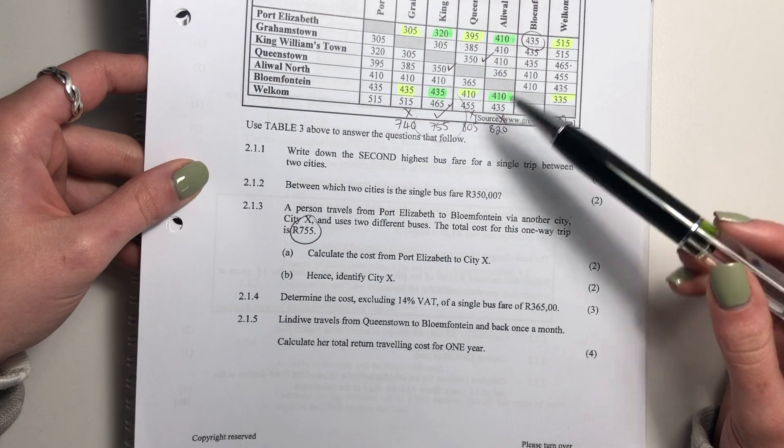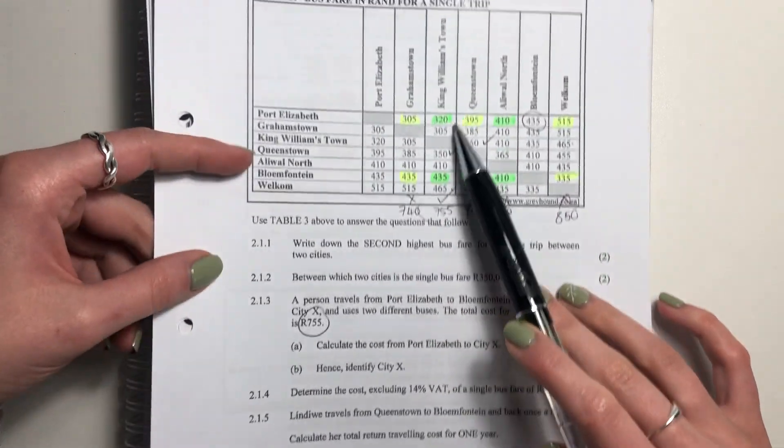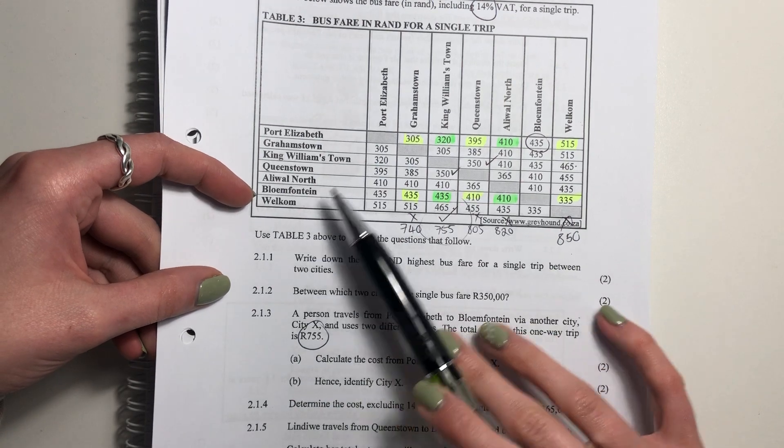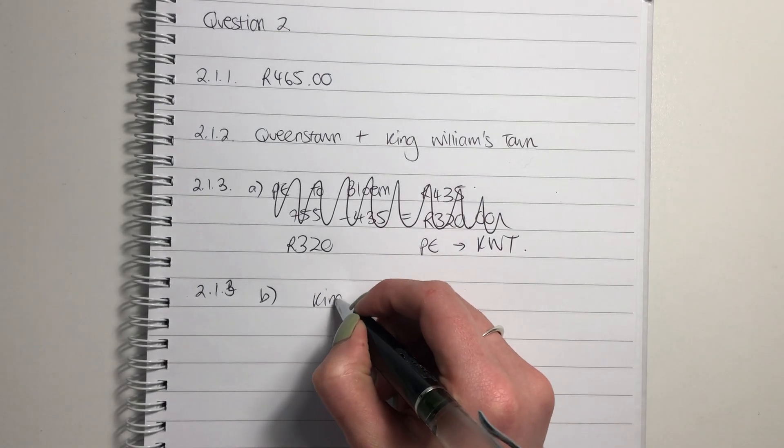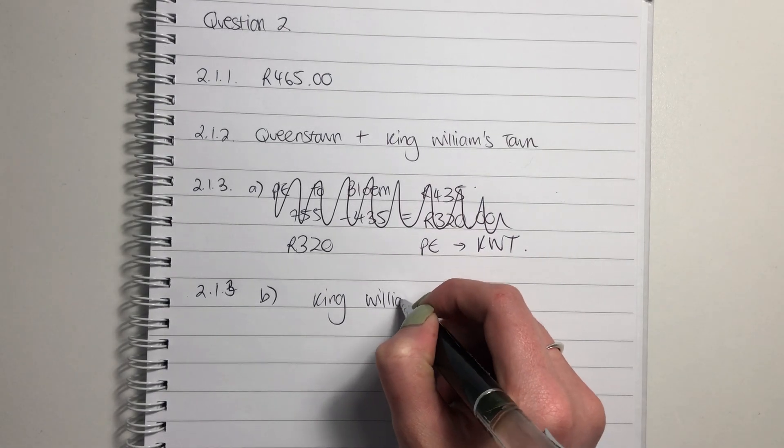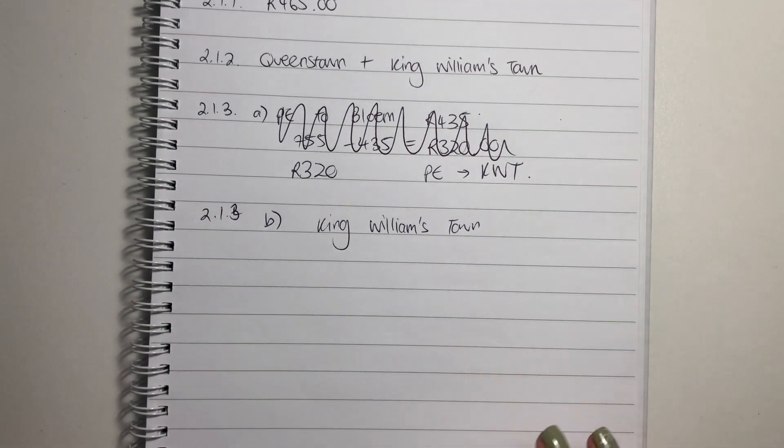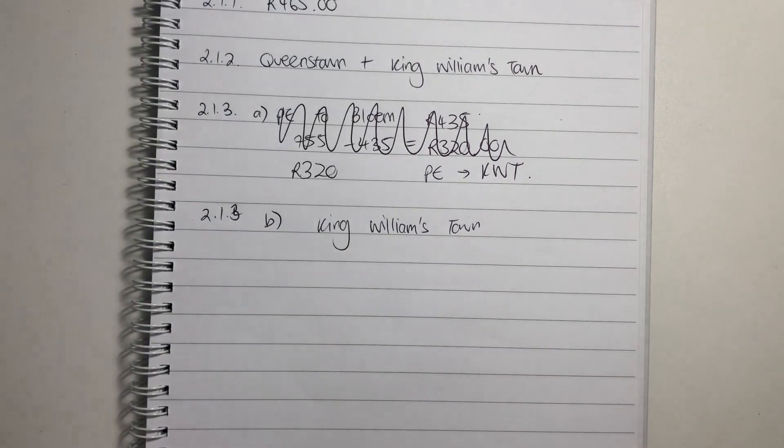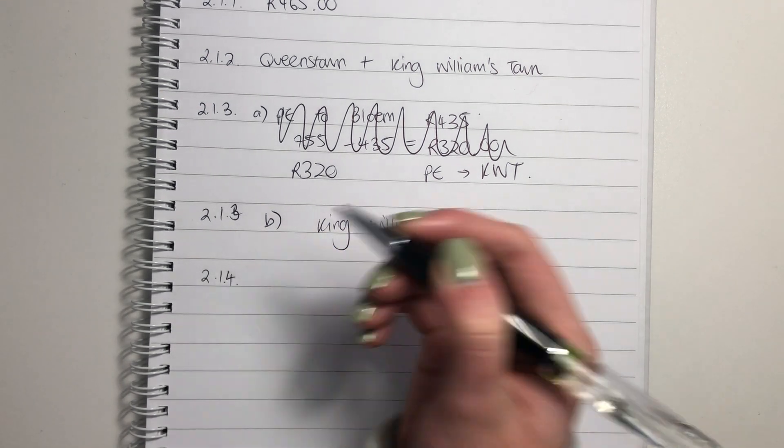So we see that from PE to King Williamstown is 320. And then we see that from King Williamstown to Bloem is 435. So what is city X? It is King Williamstown. Make sure that you're writing. Clearly I realize that my handwriting is a little bit crusty, right? But please make sure that you're writing as legibly as possible.